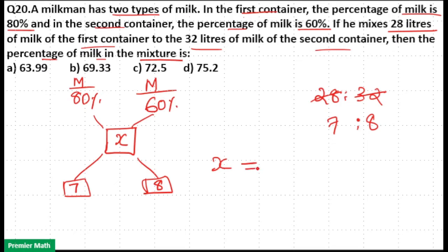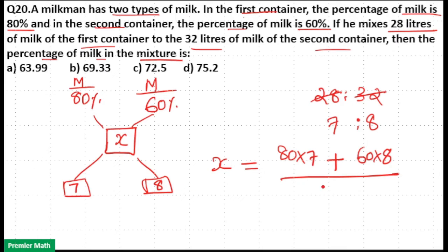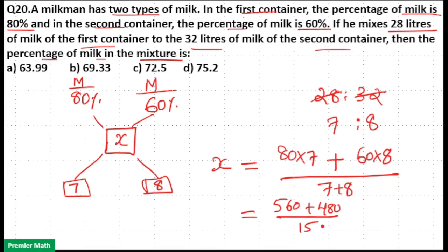To find x, we use the weighted average formula: x equals (80 × 7 + 60 × 8) divided by (7 + 8). This is the weighted average — the middle number will always be the weighted average. So x = (80 × 7 + 60 × 8) / (7 + 8).